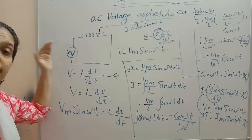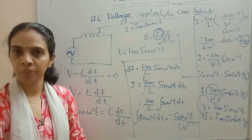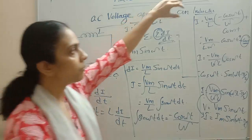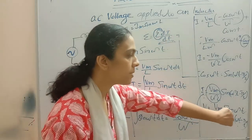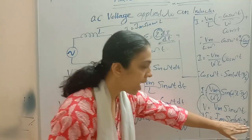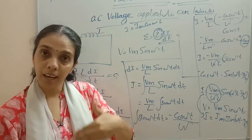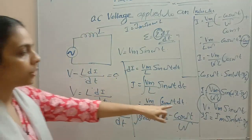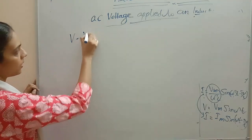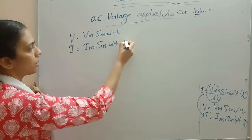When we applied a resistor, we got v equals Vm·sin(ωt) and i equals Im·sin(ωt) — both were in phase. But when using an inductor: v equals Vm·sin(ωt), while i equals Im·sin(ωt − π/2). That means current is lagging behind the voltage by a factor of π/2. So in the case of an inductor, current lags behind the voltage by π/2.